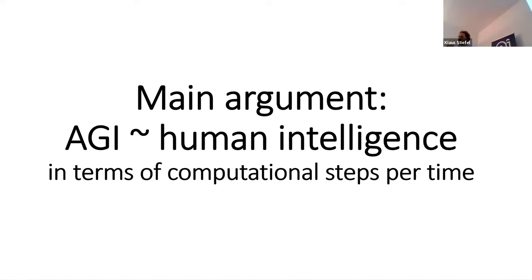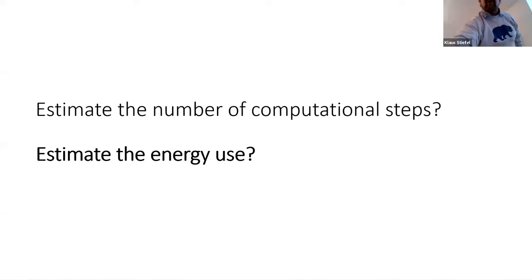We have to be similar, at least in order of magnitude to what a human brain is doing. And from this, we can then compute, we can calculate how much energy this artificial general intelligence would need to even run.